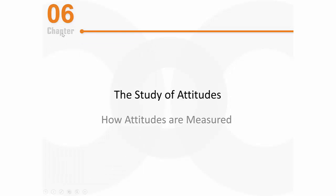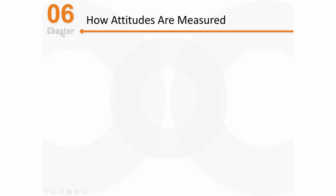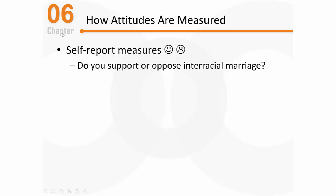Let's continue to talk about attitudes, but this time let's focus on how attitudes are measured. The most straightforward way to figure out and assess someone's attitude is to simply ask them about it, and that's what self-report measures are all about. They're very simple to use, they're straightforward, and they're cheap — those are all good things. There are some negative things associated with self-report measures that we'll talk about soon.